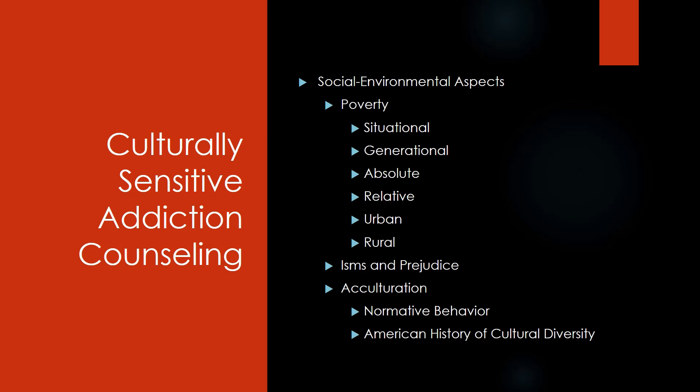Isms and prejudice — this includes oppression and what people feel. It may not actually be occurring, but it's what they feel, what they know, and what they see in people's body language. Acculturation and normative behavior. And American history of cultural diversity — our history plays a huge role in how we see each other, right, wrong, or indifferent.